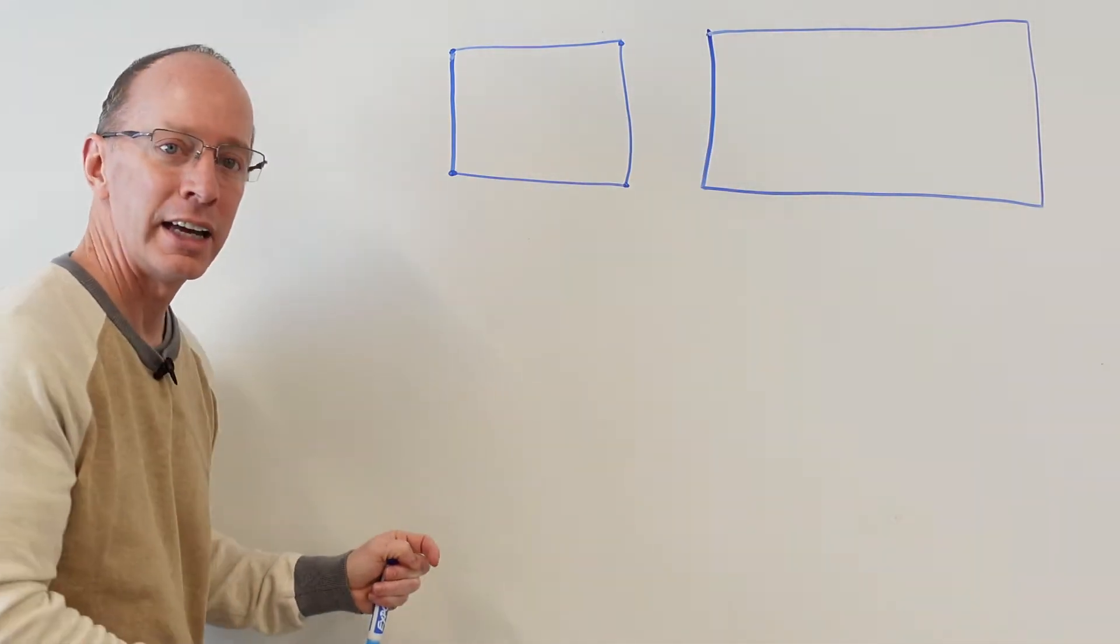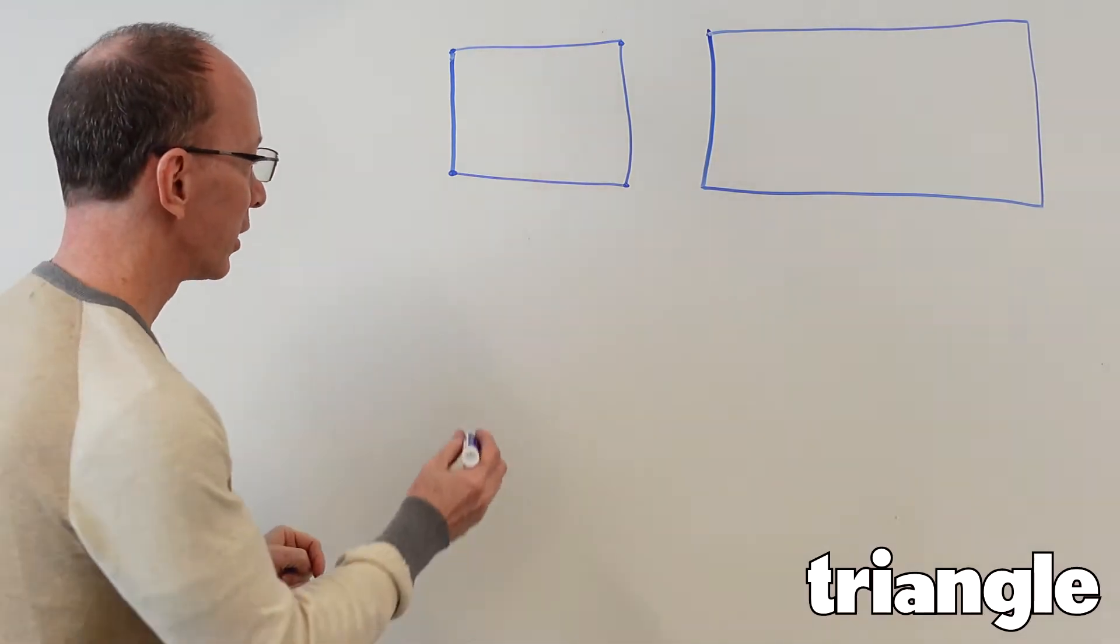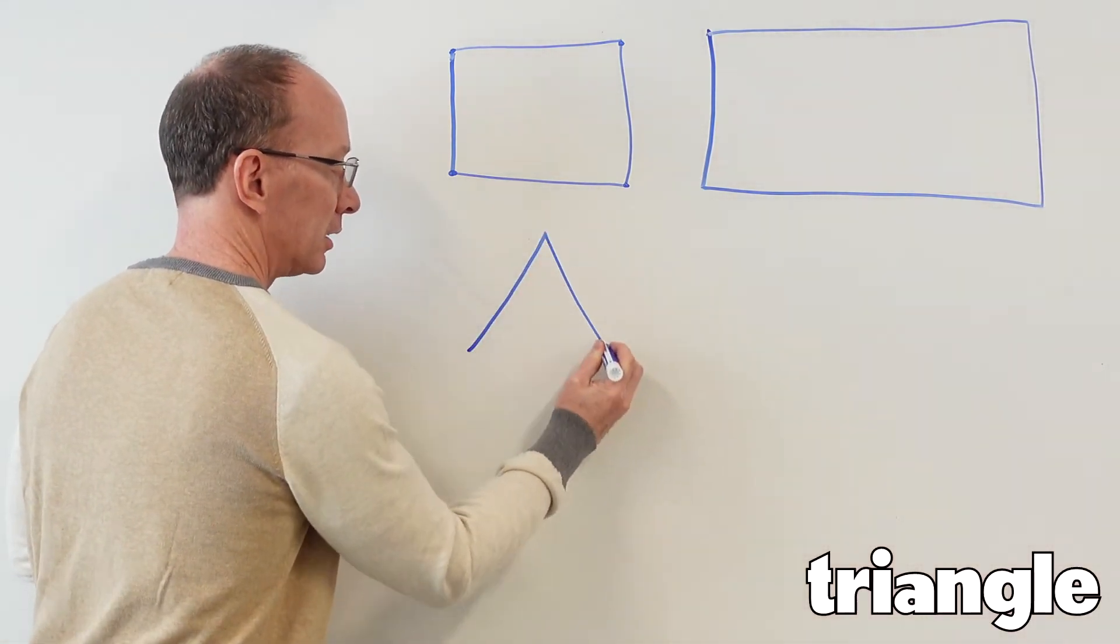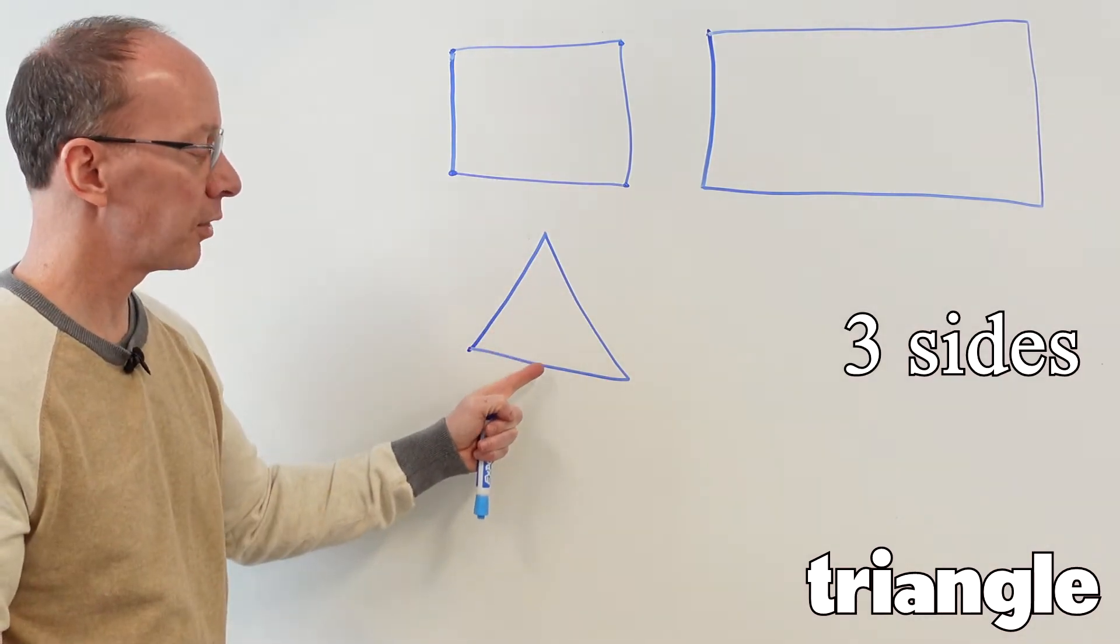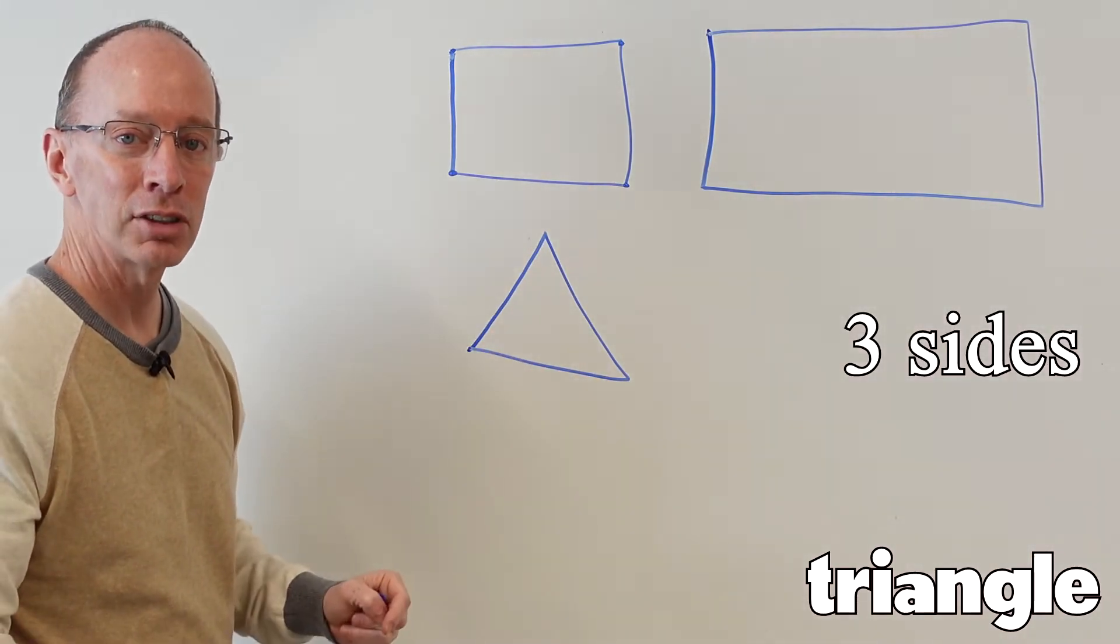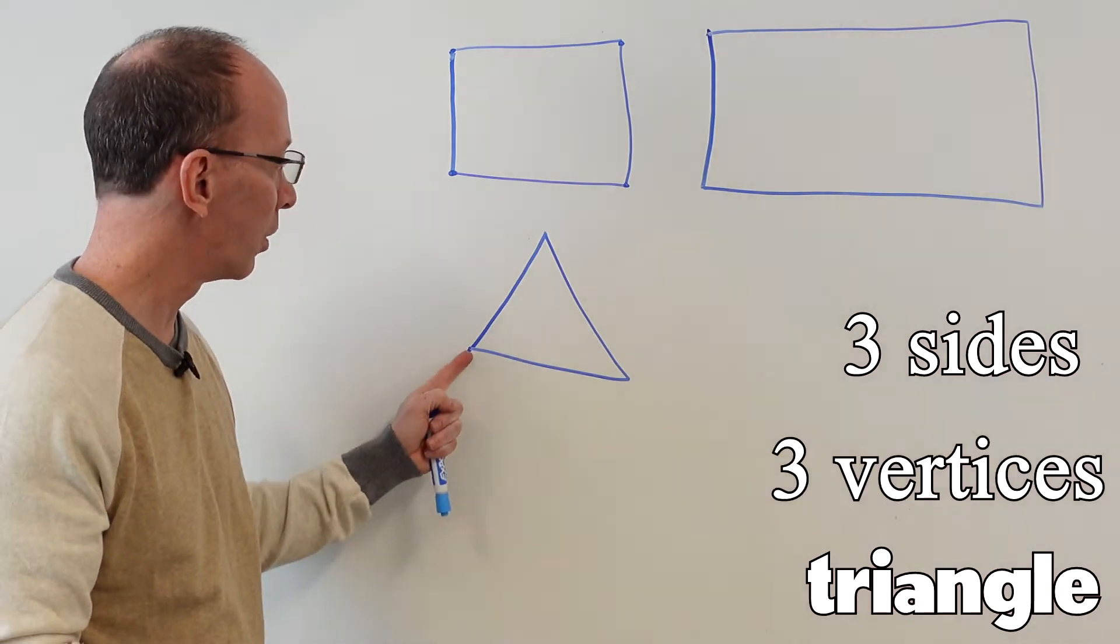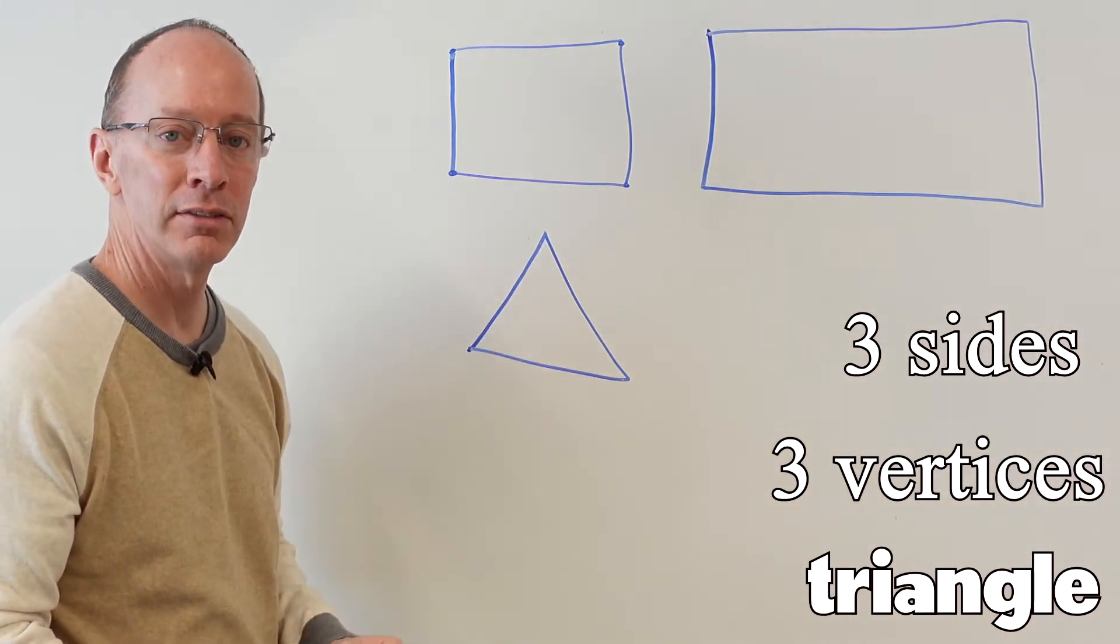Let's go ahead and draw a triangle. A triangle has three sides, one, two, three, and it also has three vertices, one, two, three vertices.